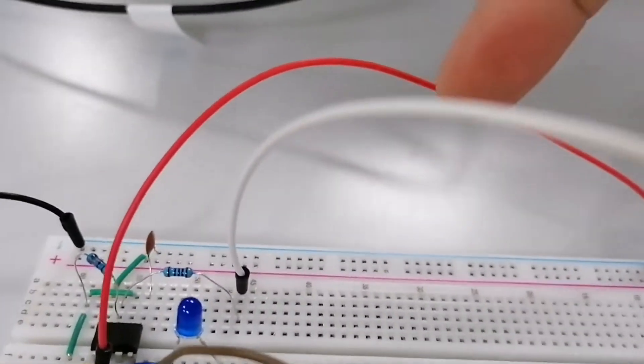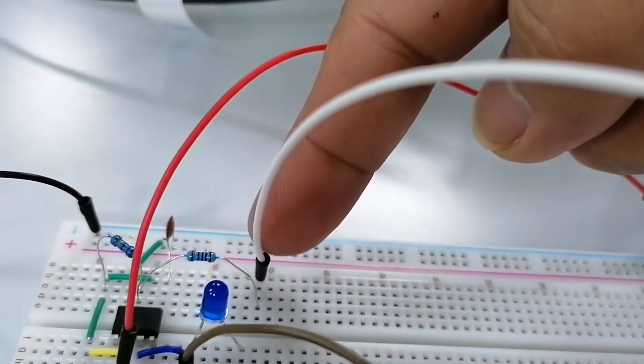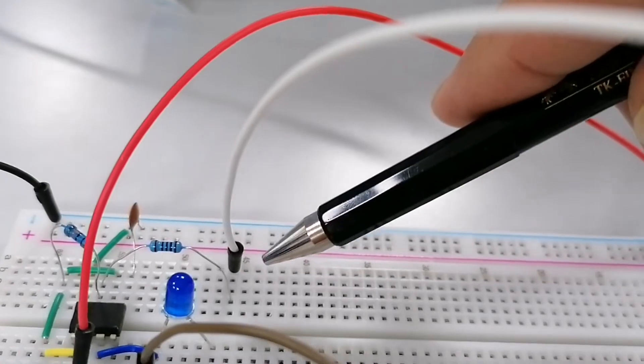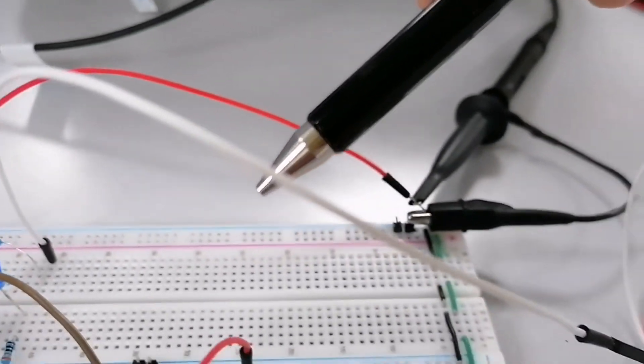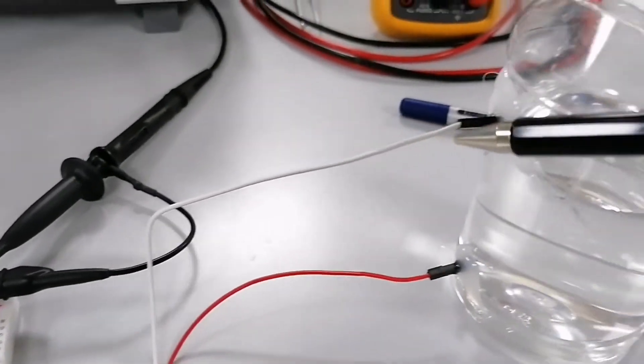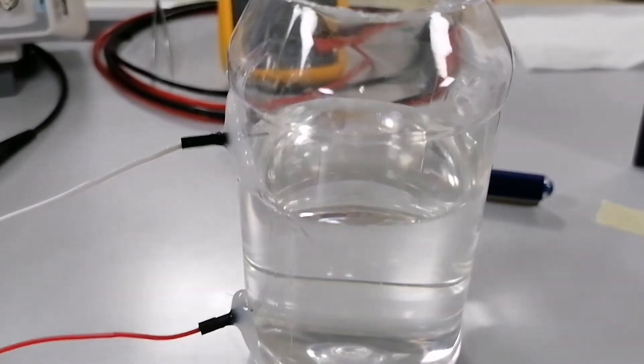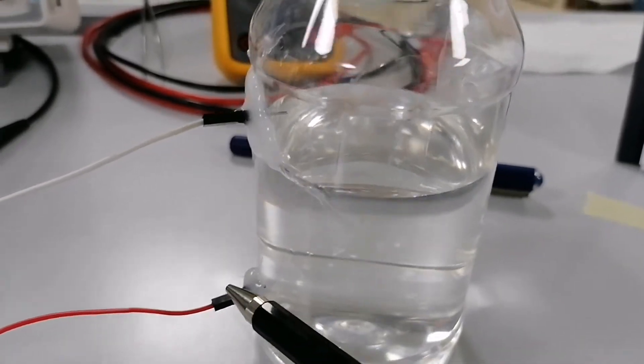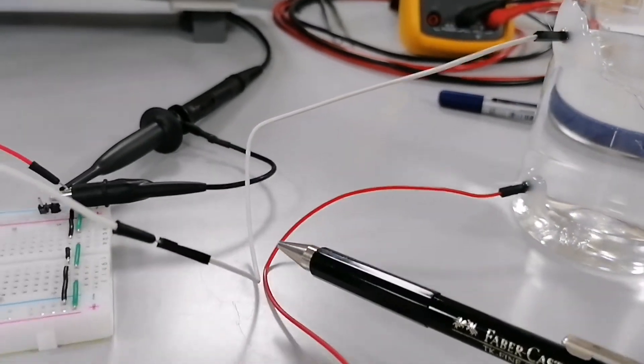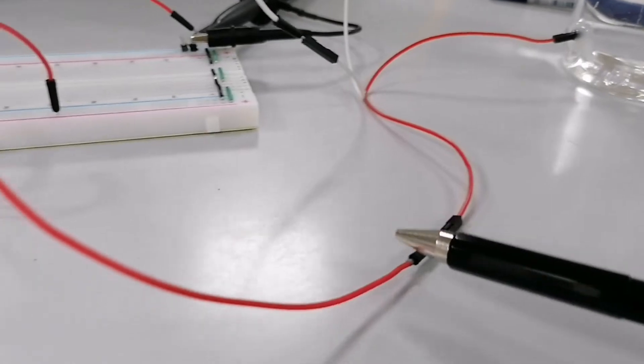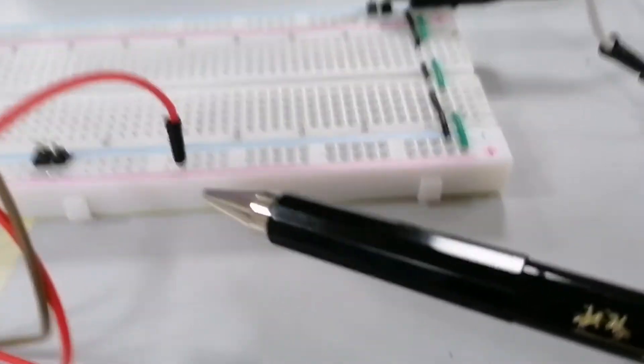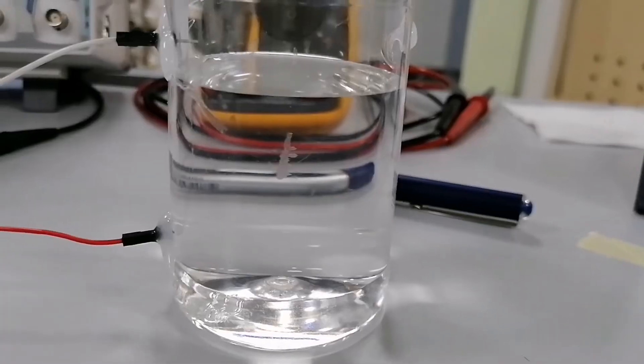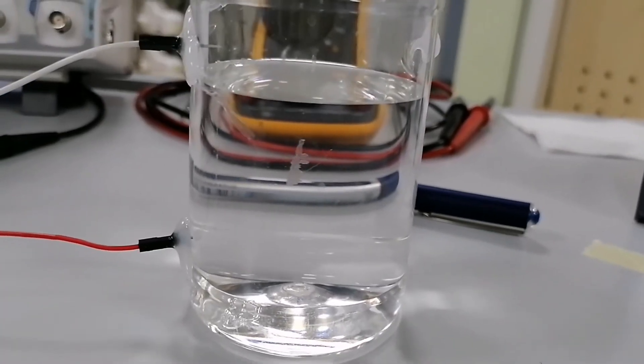So the electrode two connected to the R1 running here, going here. So this is my electrode two and electrode one. Electrode one comes from the power, this one plus.